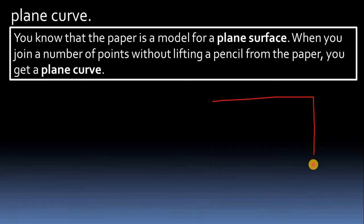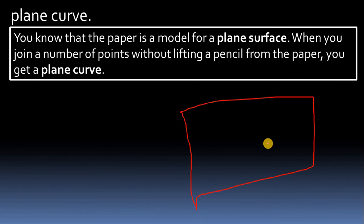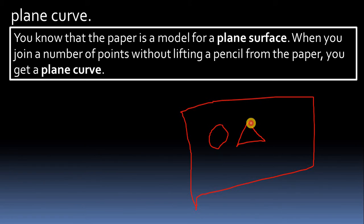Here we assume you are having one paper. The paper is nothing but a plane surface area — just like a table, the surface is exactly plane. You can draw any curve or shape there without lifting the pencil. Whatever shape is there, you can easily draw it, and that shape is known as a plane curve.